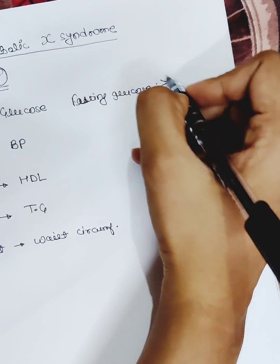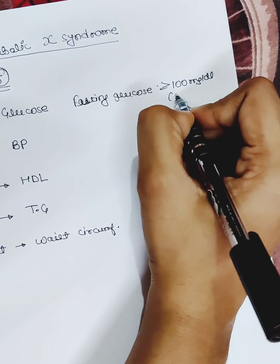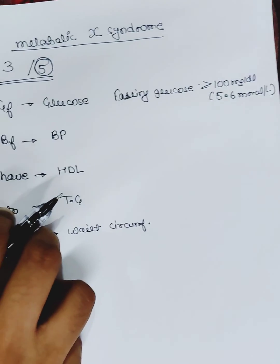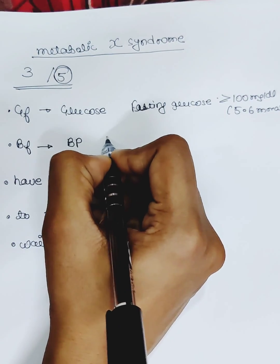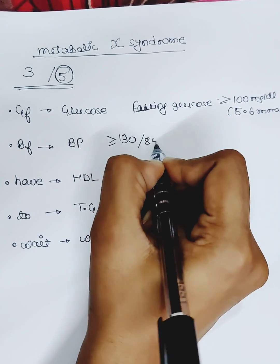more than 100 milligram per deciliter or more than 5.6 millimole per liter. Second is BP. BP should be systolic more than 130, diastolic more than 85.